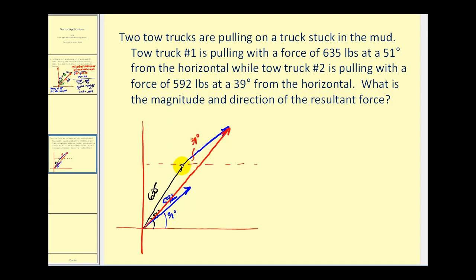If the angle between the black vector and the x-axis is 51 degrees, then this angle and this angle here will be supplementary. So 180 minus 51 gives us 129 degrees for this angle. And 39 degrees was this small angle, so this large obtuse angle will have a measure of 129 degrees plus 39 degrees, which equals 168 degrees. So this large obtuse angle has a measure of 168 degrees.